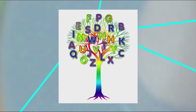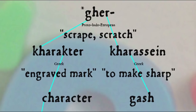So an alphabet is a writing system in which individual characters, at least theoretically, represent individual distinct sounds. By the way, that word character comes from another Proto-Indo-European root that implies the original carving or writing, ger, meaning scrape or scratch, which came into Greek as charisane, meaning to make sharp, and charakter, which, after passing through Latin and French, give us not only the word character, but also gash.